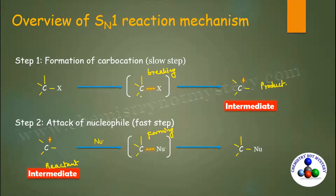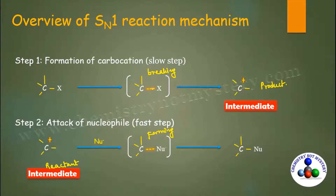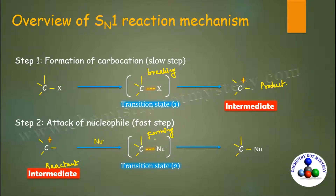So carbocation is your intermediate for SN1 reaction mechanism. In the first transition state, the bond between carbon and leaving group is breaking. In the second transition state, the bond between carbon and nucleophile is still forming.